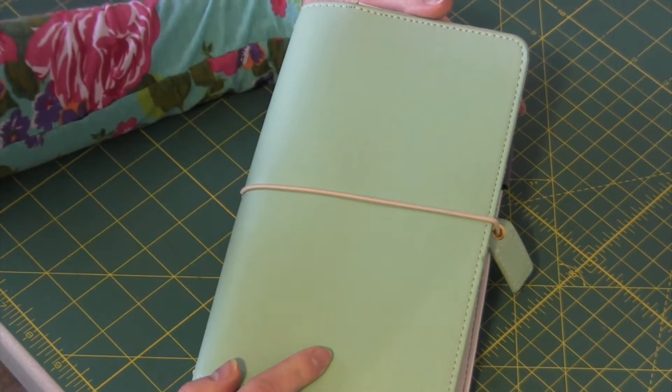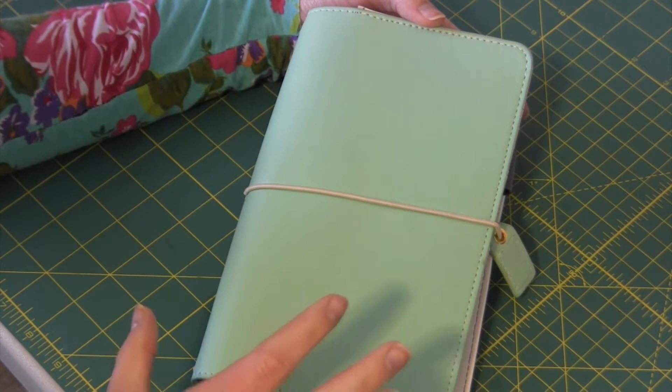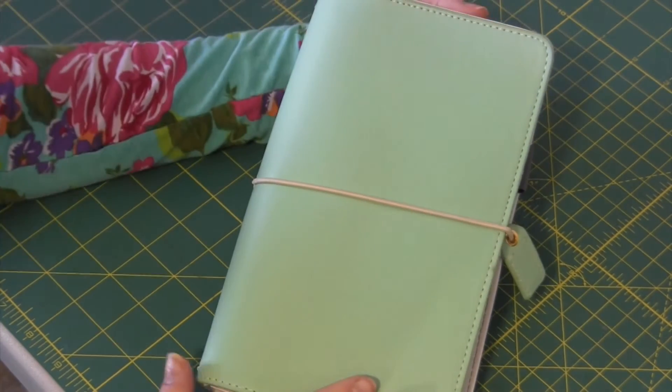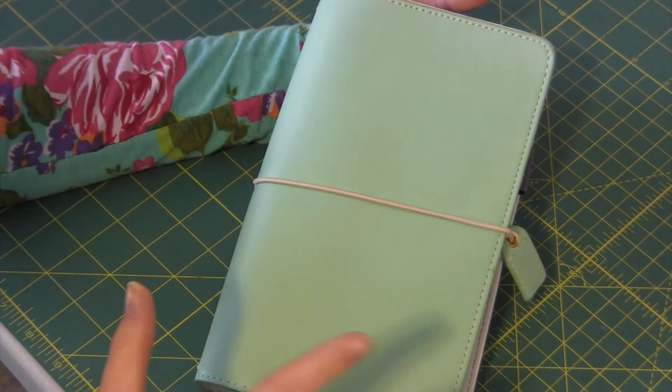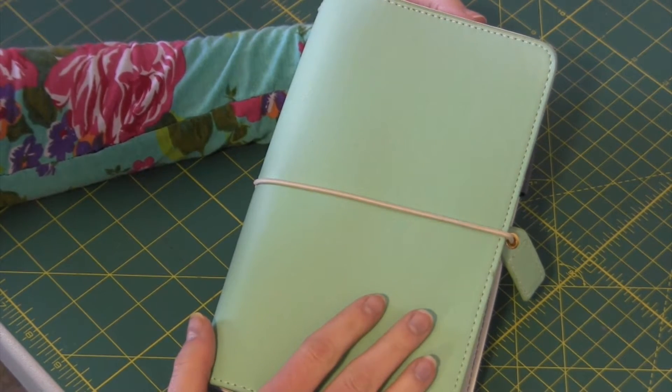Traveler's notebooks come in all different sizes. There's pocket, micro, and we're talking like this big. There's personal size, A5 size, A6, B6, all these different sizes and I just prefer the standard size.